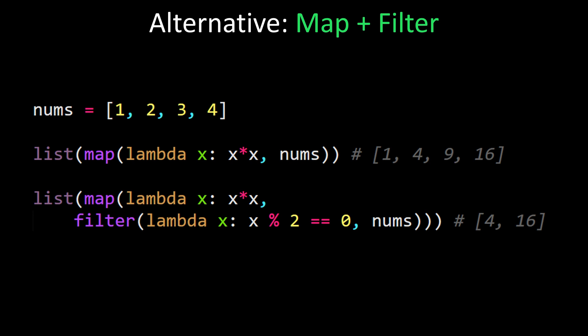To square each element in the list, you can have a lambda function that does the squaring and a map that applies that lambda function to each element of nums. That's the second line in the code here.